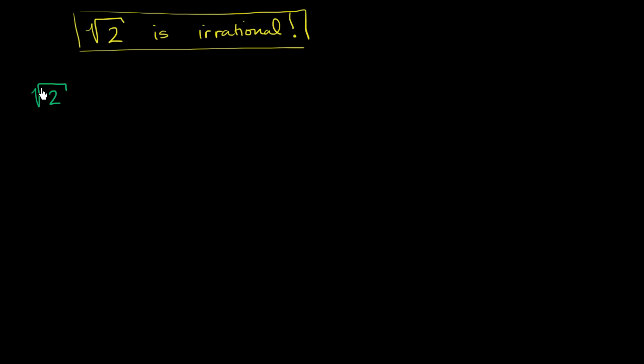So let's assume the opposite: square root of two is rational. If the square root of two is rational, that means we can write the square root of two as the ratio of two integers, a and b. We can also assume that these have no factors in common — in other words, that a and b are co-prime, or that this fraction a over b is irreducible, where these no longer share any factors.